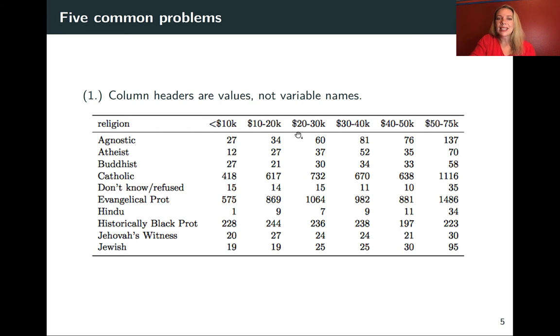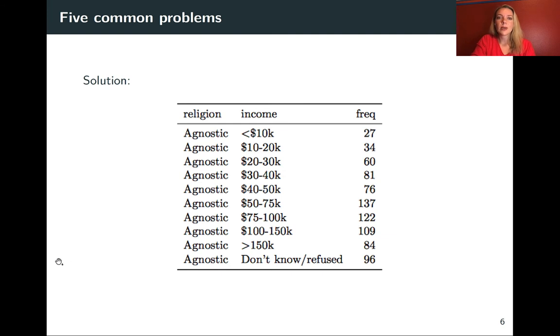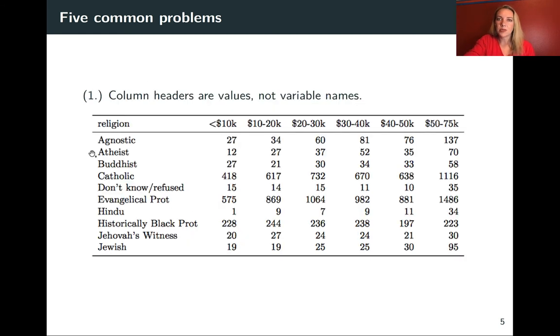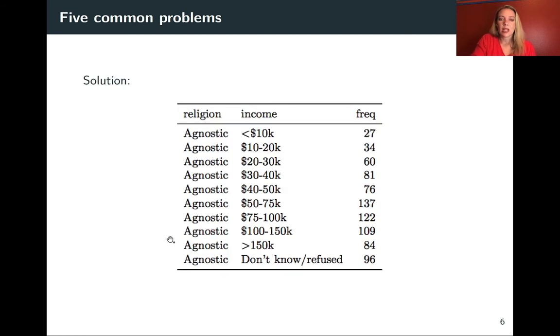So to make this data tidy, we want to take this information out of the column names and have it in its own column where we can really work with it. We often say in this case that we are taking the data from a wider format to a longer one where we're going to bring some of that information in the column names down and that will make the data frame longer. Here's the solution. In this case, that information on the income levels has been pulled in. So before we had one row for each of these religious categories. Now we're going to have six rows for each of those because we'll have one for each combination of income level. Now we have one row for each of these separate combinations of religion and income level.